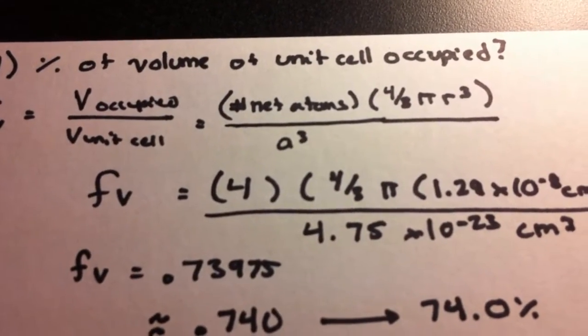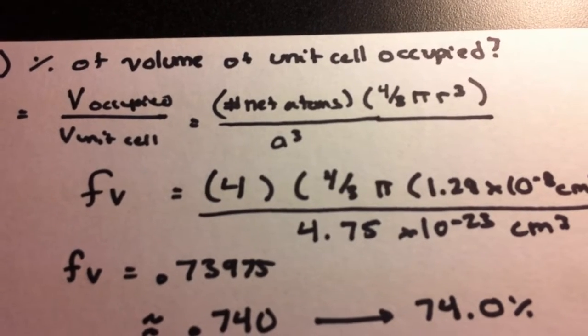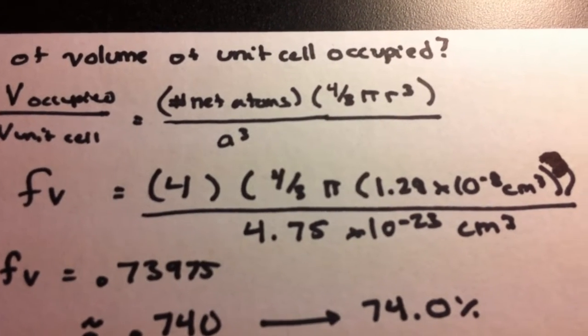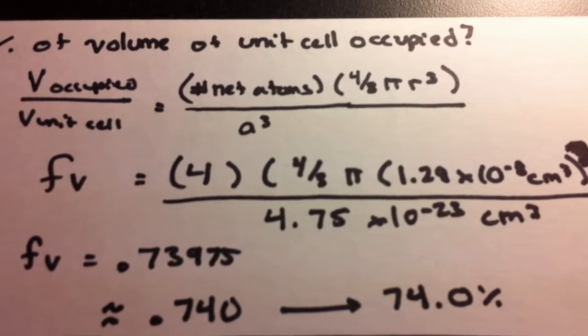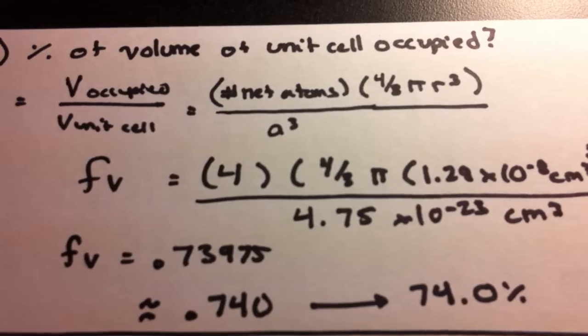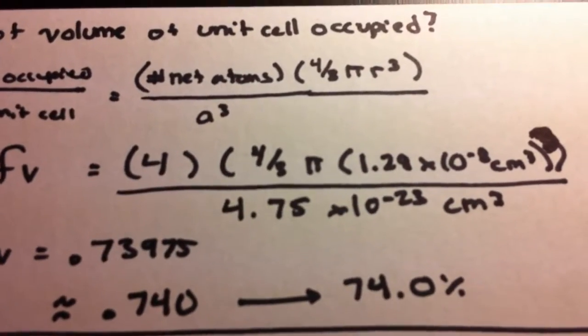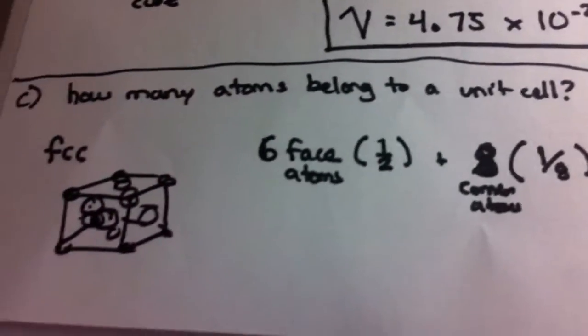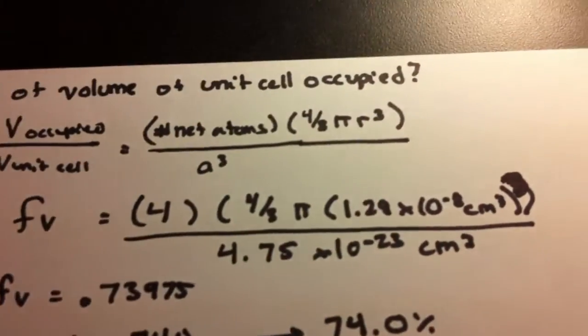For the volume occupied, it's basically the number of atoms times the volume of a sphere, since I suppose atoms are best represented by spheres. So, again, plug and chug. The number of net atoms, as we calculated earlier, was four. So four it is.